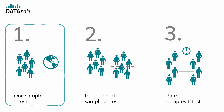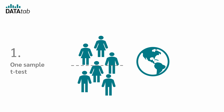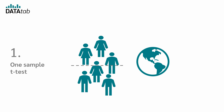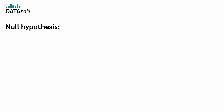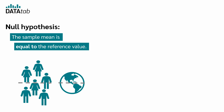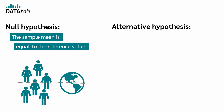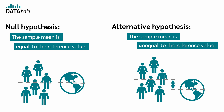When do we use the one-sample t-test? We use the one-sample t-test when we want to compare the mean of a sample with a known reference mean. The null hypothesis in the one-sample t-test is that the sample mean is equal to the given reference value — so it assumes there is no difference. The alternative hypothesis is that the sample mean is not equal to the given reference value.